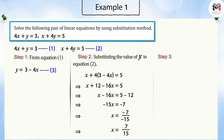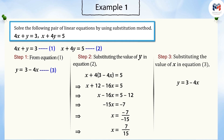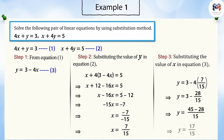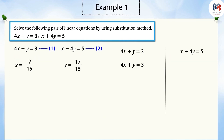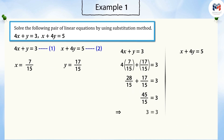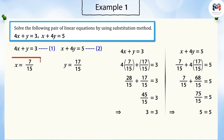In the third step, we take the value of x obtained from step two and substitute it in equation three to find the value of y. On doing so, we get y is equal to seventeen by fifteen. We substitute the values of x and y in equations one and two, and it can be proved that x = 7/15 and y = 17/15.